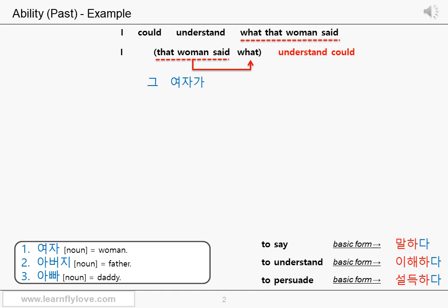Said what? The basic form of the verb 'say' is 말하다. 말하 is the stem. In order to turn it into the verb clause modifier in the past tense, you add the final ㄴ consonant to the stem: 말한. And use one of the representative nouns which means 'a thing': 것. So it becomes 말한 것.